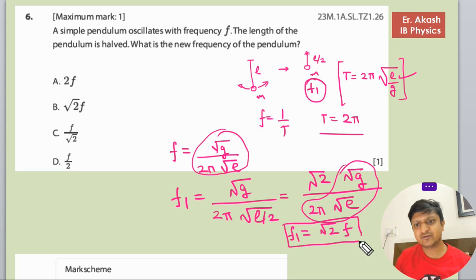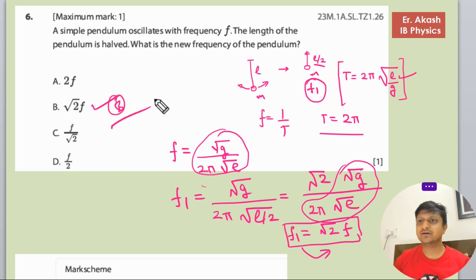See, in this question this is a very simple question but calculation mistake can be done in this question, so you have to do it very seriously in very understanding manner. So what's happening is the new frequency will be created due to the half length, so new frequency will be root 2 f, so B will be the right answer.